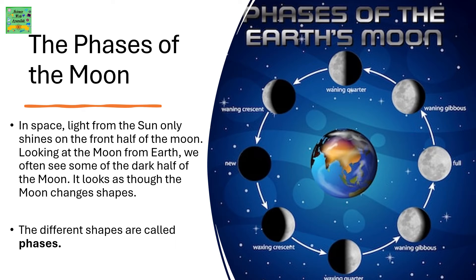The Faces of the Moon. In space, light from the sun only shines on the front half of the moon. Looking at the moon from Earth, we often see some of the dark half of the moon. It looks as though the moon changes shapes. The different shapes are called faces.